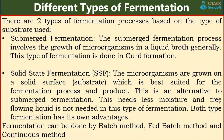There are two types of fermentation processes based on the type of substrate used. The first one is submerged fermentation and the second one is solid state fermentation. In submerged fermentation, it involves the growth of microorganisms in a liquid broth generally, and this type of fermentation is done in curd formation. In solid state fermentation, the microorganisms are grown on a solid surface — a substrate which is best suited for the fermentation process and the product. This is an alternative to submerged fermentation and needs less moisture; free flowing liquid is not needed.